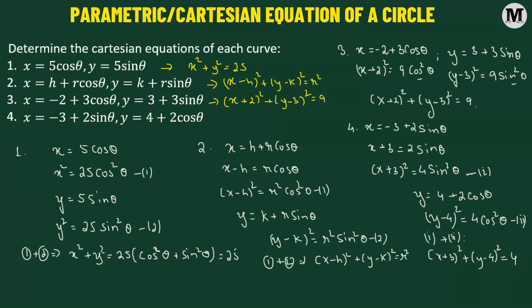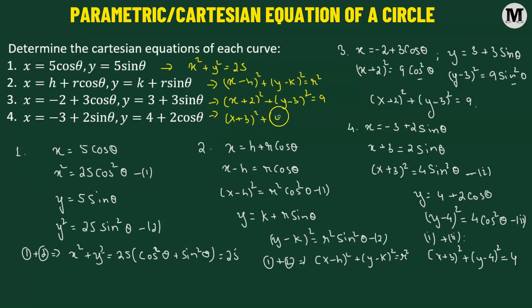Therefore, the Cartesian equation of the given parametric equation is x plus 3 whole squared plus y minus 4 whole squared equals 4.